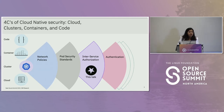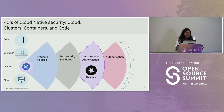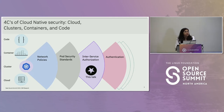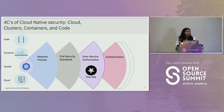In this talk, we will be majorly focusing on inter-service authorization, but the solution we are presenting could be generalized to different aspects like network policies, pod security standards, et cetera. At the cloud level, we ensure security at the infrastructure level — for example, AWS and IBM Cloud ensuring security at the infrastructure.